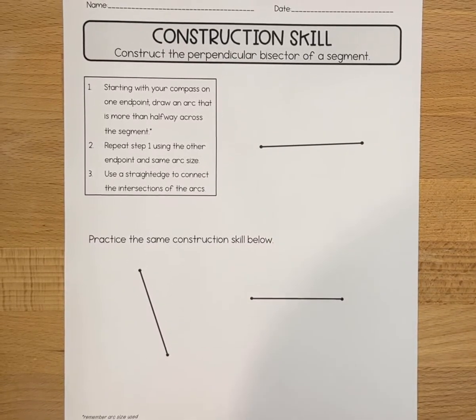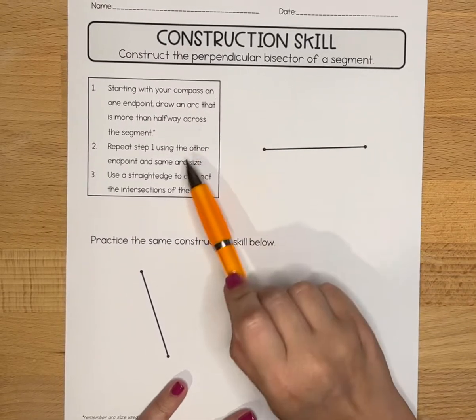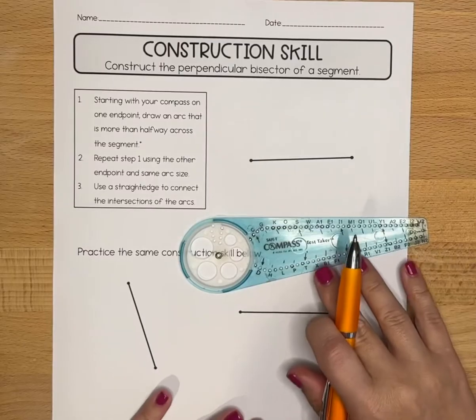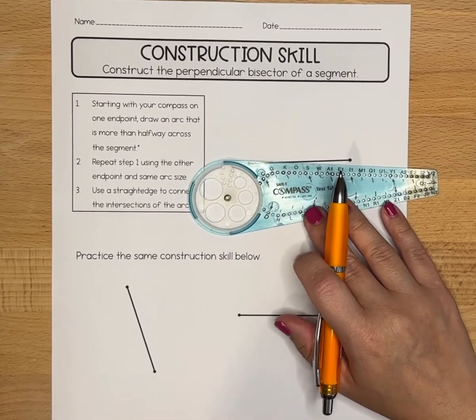In this video, we'll be going over how to construct the perpendicular bisector of a line segment. You can follow along with our directions here. Starting with your compass on one endpoint, we're going to draw an arc that is more than halfway across the segment.